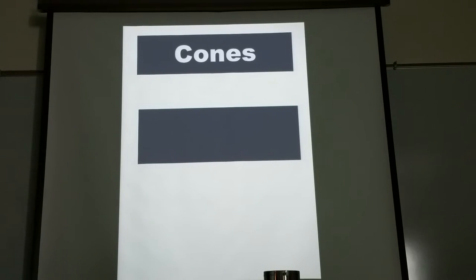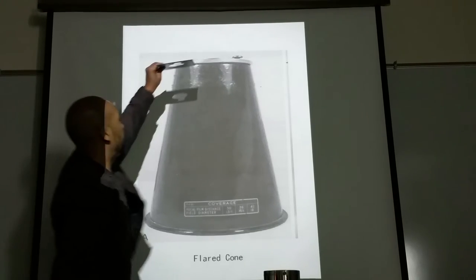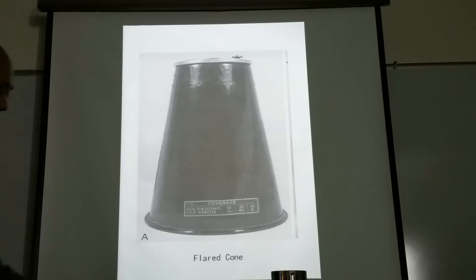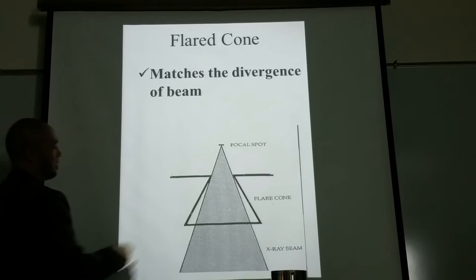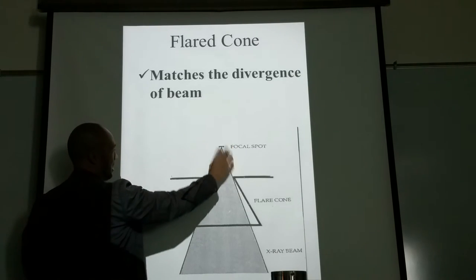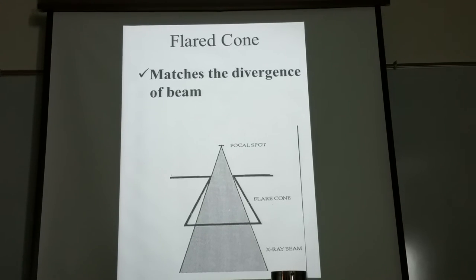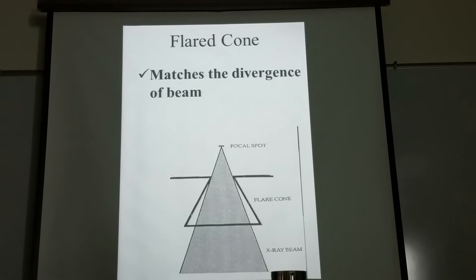The second type is cones — we have the flared cone and the cylindrical cone. The flared cone, like the aperture diaphragm, slides onto the x-ray tube slot. It does match the divergence of the beam, but because it matches the divergence, it isn't effective in cleaning out the penumbra on the edges. We can still control the size of the beam, but it doesn't truly clean out the beam edges.